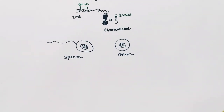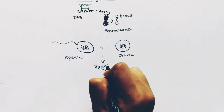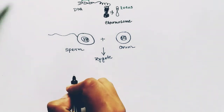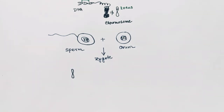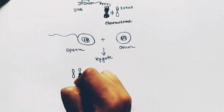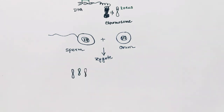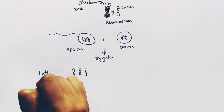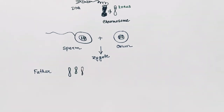In the sperm we will get three chromosomes, and the same set of three chromosomes will be in the ovum. When the sperm and the ovum fuse and form the zygote, we get three chromosomes from the sperm, which we can number as chromosome number one, two, and three.